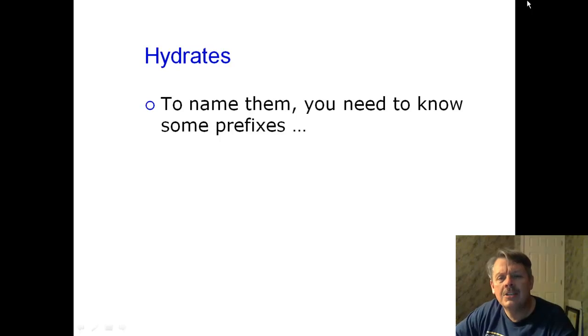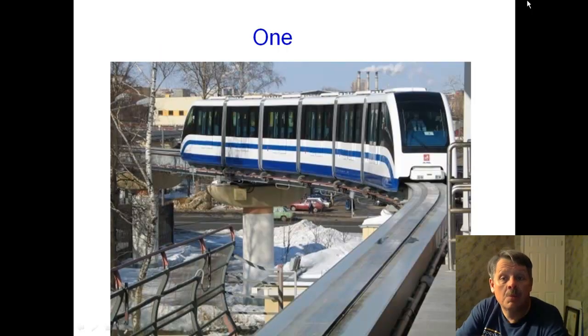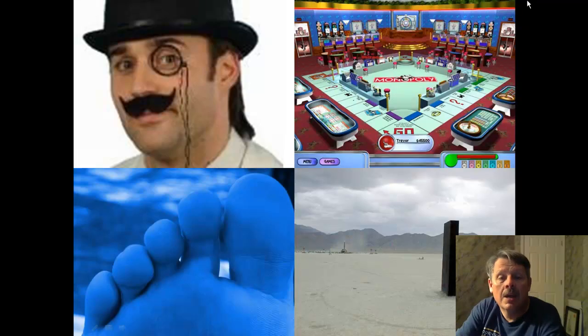To be able to name hydrates, you need to know some prefixes. So what we're going to do is we're going to go through some prefixes, and hopefully you'll have some things here that will help you remember what the prefixes are. For example, the prefix for the number one is this thing. What is this? Sure. It's a monorail. So you hear the term mono for monorail. That's a monocle up on the left.